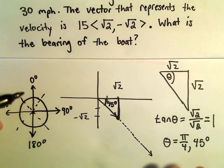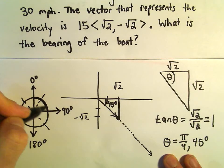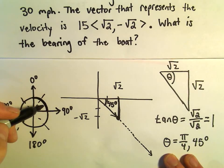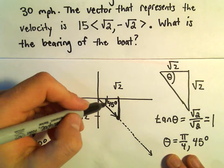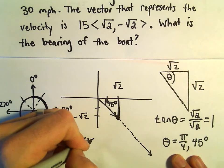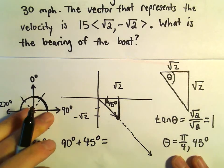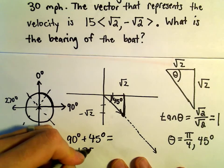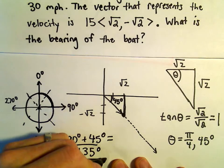So in this case, if we went due east, we would be at a bearing of 90 degrees. But actually, we traveled an extra 45 degrees. So 90 degrees plus 45 degrees is going to give us a bearing of 135 degrees.